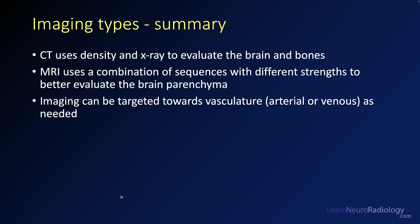In summary, we've seen a variety of imaging types used for brain imaging. CT uses the density of tissue and x-rays rotating around the patient to image the brain and bones. MRI has a variety of sequences with much better soft tissue contrast, so you see the brain better. Either modality can be used for targeted imaging of the vasculature when looking for vascular pathology such as stroke, using techniques called angiography or venography — both achievable by CT or MRI.